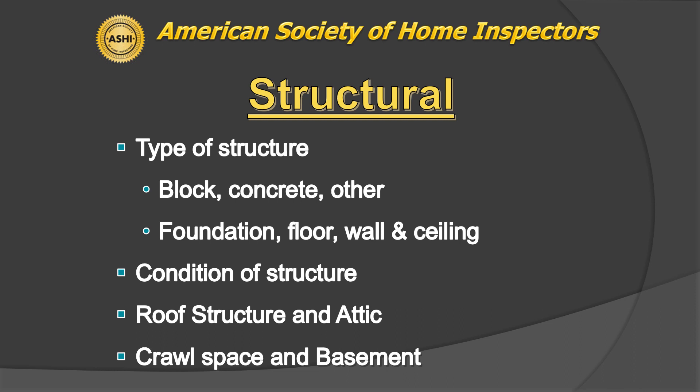In a home inspection, the things covered in the structural section are the types of structure — block, concrete, other types of foundation — the floor structure, the wall structure, the ceiling structure, and the conditions of the structure. You will inspect the attic and the roof structure from inside the attic. And crawl spaces is what we have here; I've come across a couple basements, but mostly it's slab and crawl space in this area.